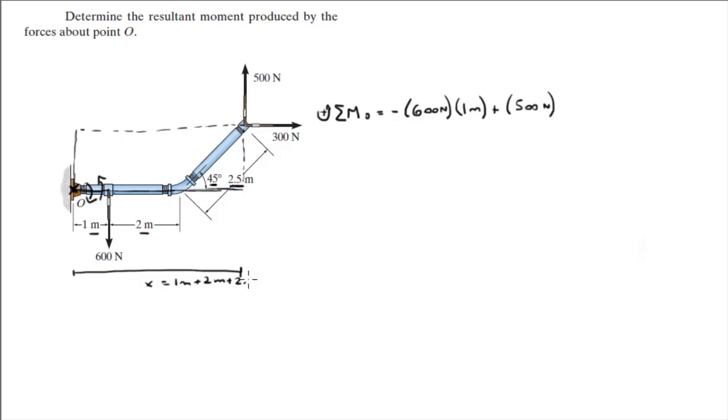Cosine of 45 degrees, and it comes out to be 1 plus 2 plus 1.77 meters, and that's 4.77 meters.